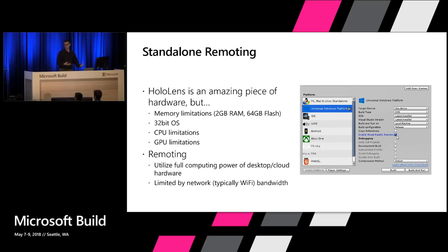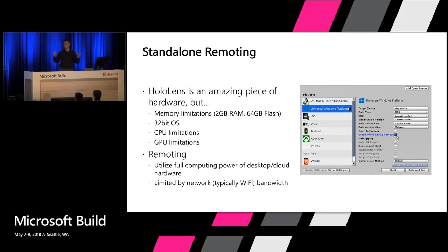What if you wanted to take advantage of the same sort of connectivity — connecting to the HoloLens from a stand-alone application — and use the full power of a desktop computer on the HoloLens? In Unity 2018.2, we're allowing you to do just that: you can create a stand-alone remoting application. The application runs on a full-powered desktop computer, connects to the HoloLens over a network connection, and users wearing the HoloLens will see the full rendering environment with the power of the desktop.